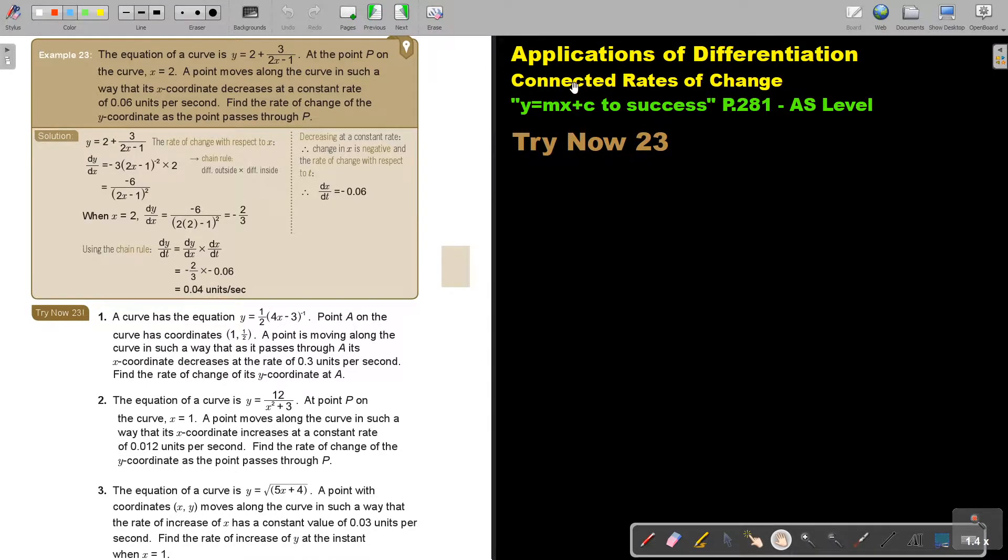Applications of differentiation. We are going to continue with connected rates of change. You will find this on page 281 in the Namibia A.S. level mathematics textbook Y equals MX plus C to success. Let's look at an example. The equation of the curve is this function. At the point P on the curve, X is 2. A point moves along the curve in such a way that its X coordinate decreases, this is very important, decreases at a constant rate of 0.6 units per second. Find the rate of change of the Y coordinate as the point passes through P.